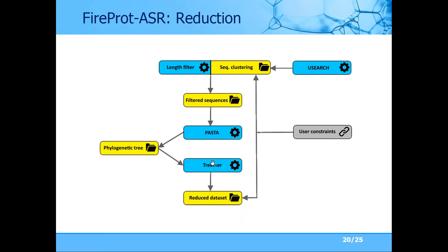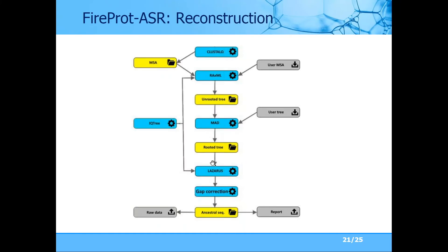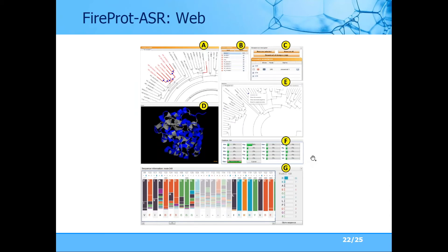Once we reduce the dataset to a reasonable size of about 150 sequences, we construct a multiple sequence alignment and a more robust phylogenetic tree using the maximum likelihood algorithm. We then root this tree using the minimum ancestral deviation algorithm, published about a year ago in Nature. Once rooted, we again use maximum likelihood to construct ancestral sequences and proceed with reconstruction of ancestral gaps using our own newly designed algorithm. With all of this we are able to design ancestral sequences and provide them to users via the interactive interface.